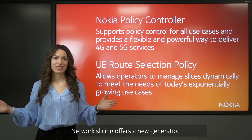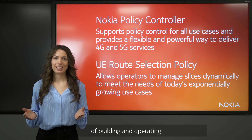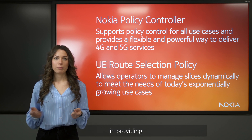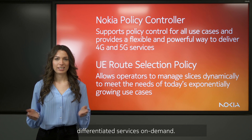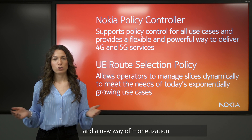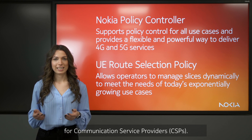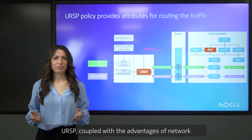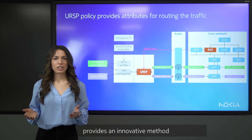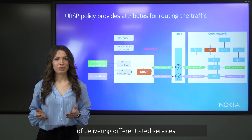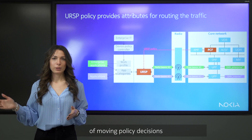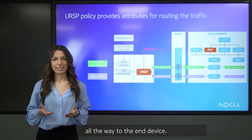Network Slicing offers a new generation of building and operating networks, ensuring unlimited flexibility and speed in providing differentiated services on demand. URSP provides further value-added opportunities and a new way of monetization for CSPs. URSP coupled with the advantages of network slicing and policy control function provides an innovative method of delivering differentiated services to the end user by giving the capability of moving policy decisions all the way to the end device.